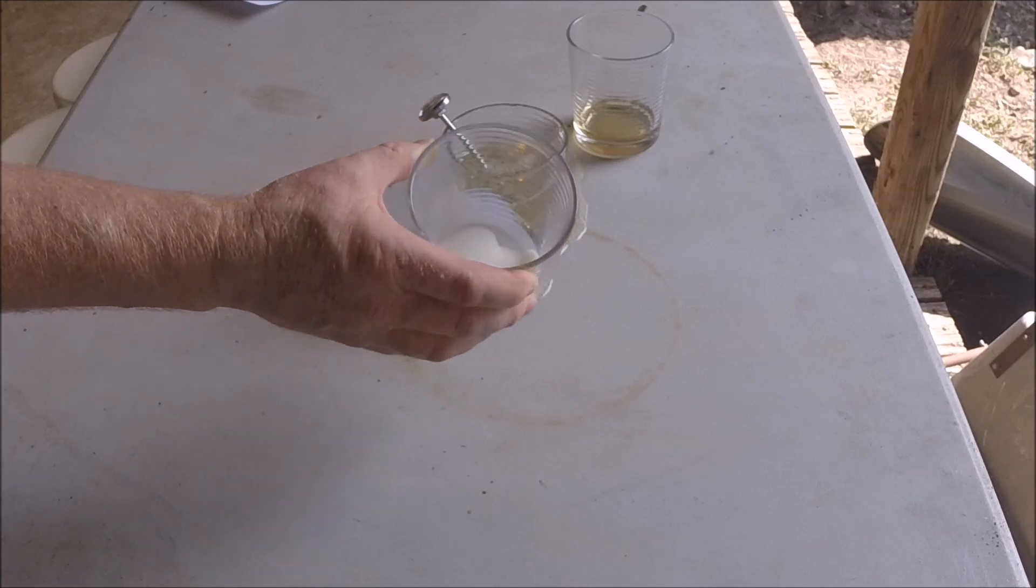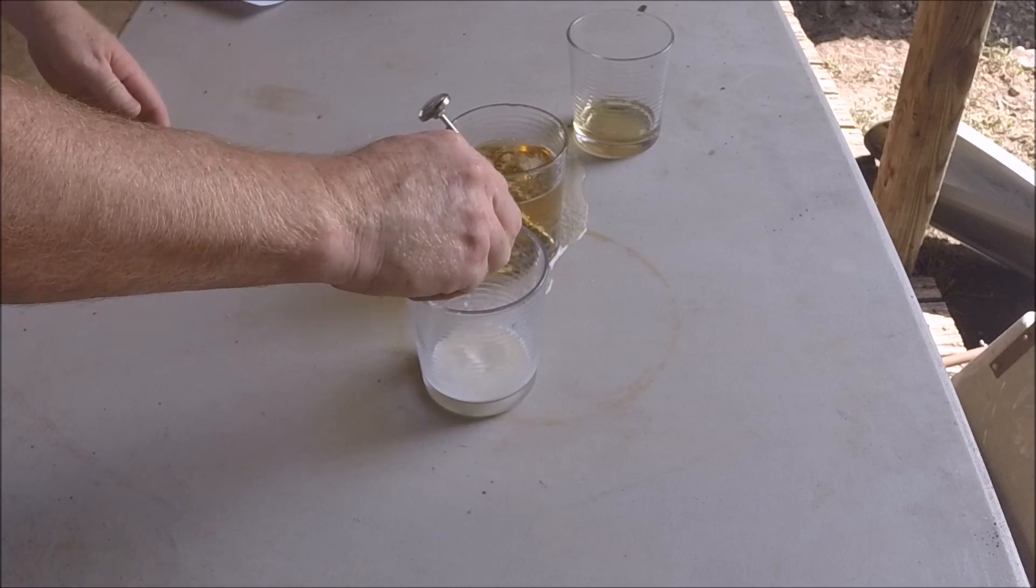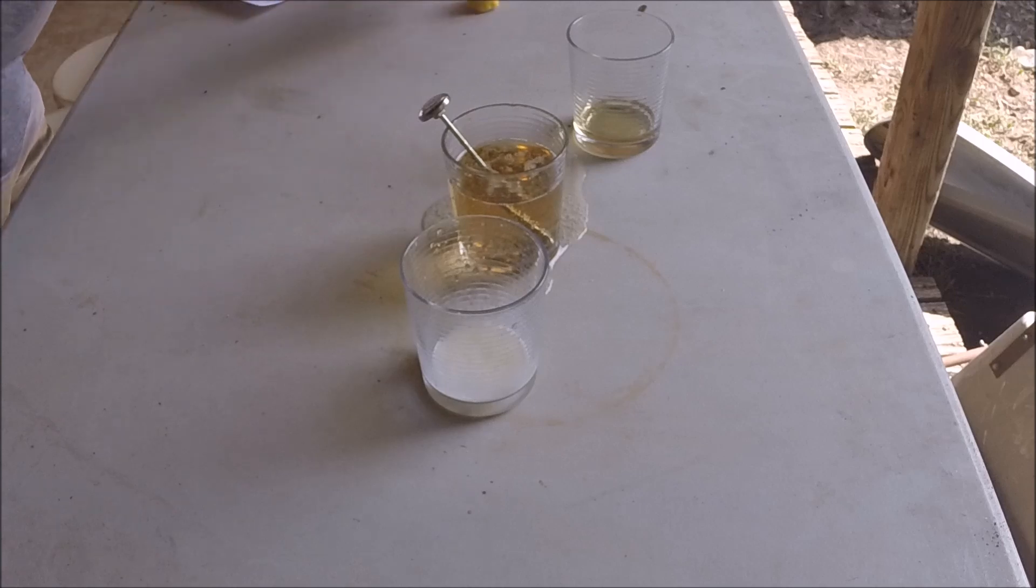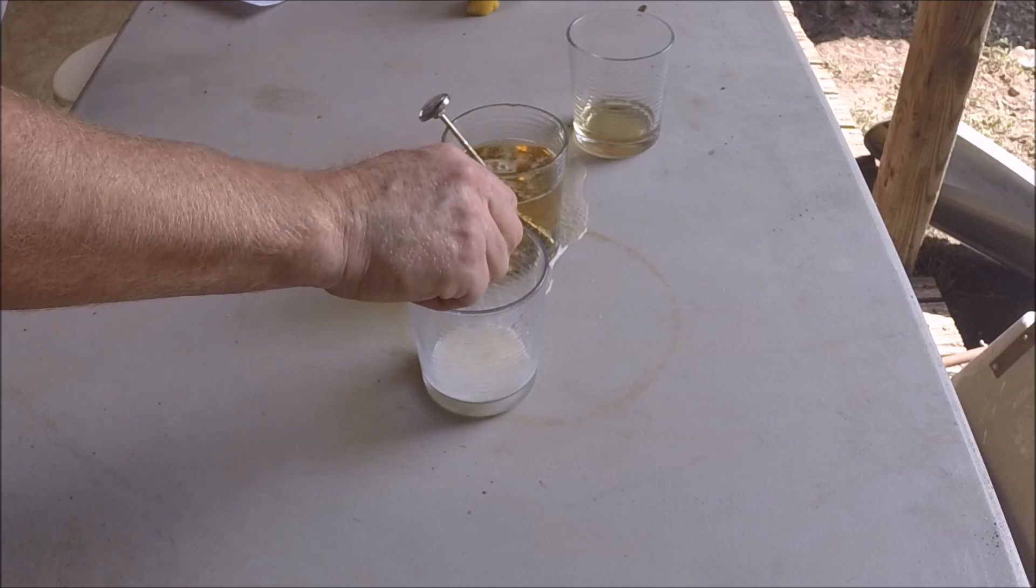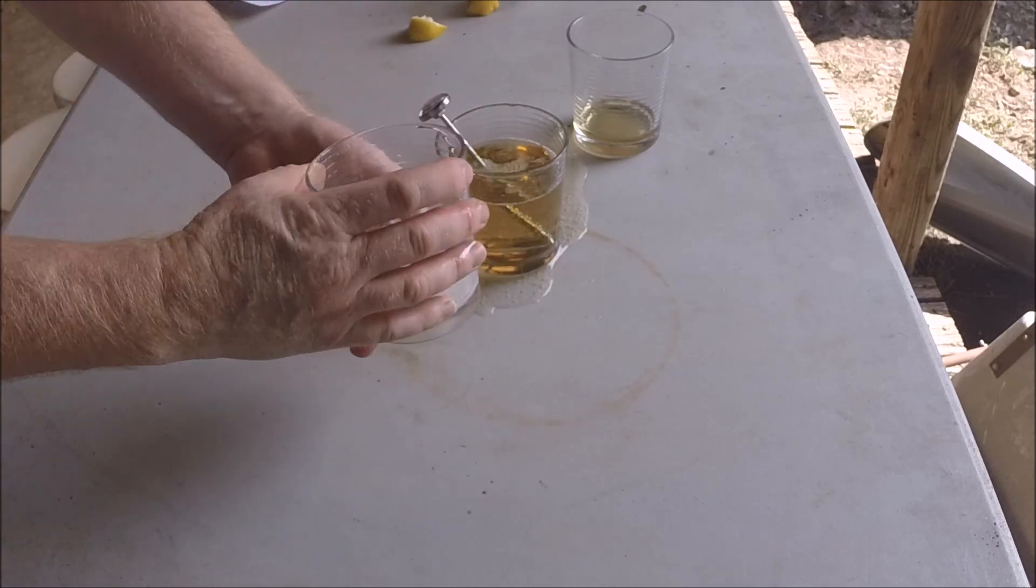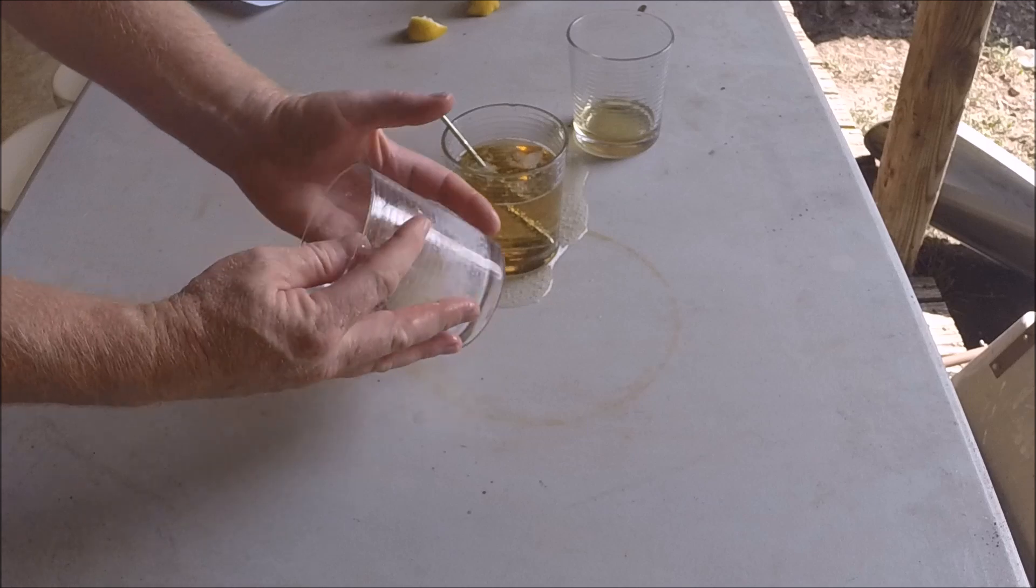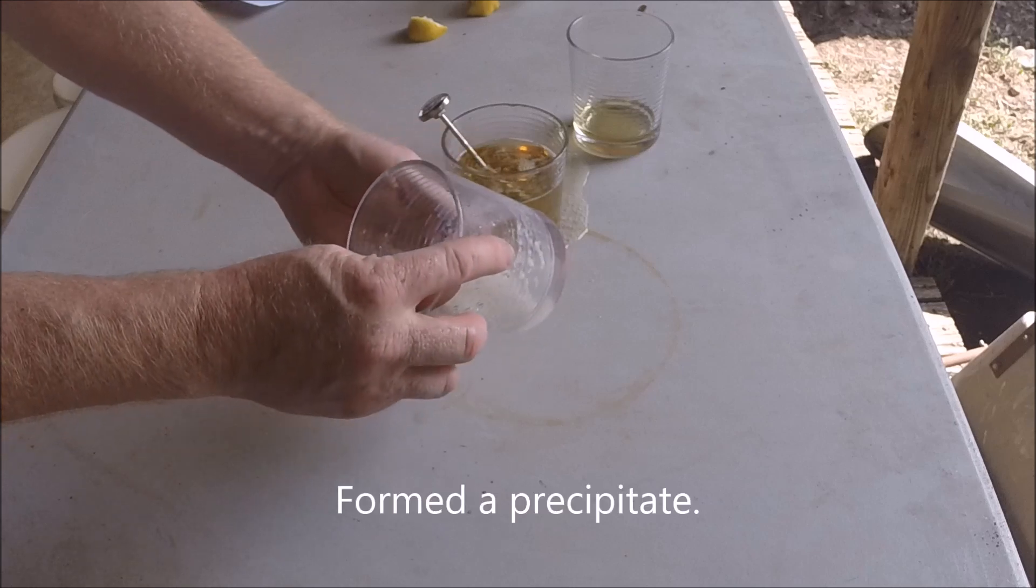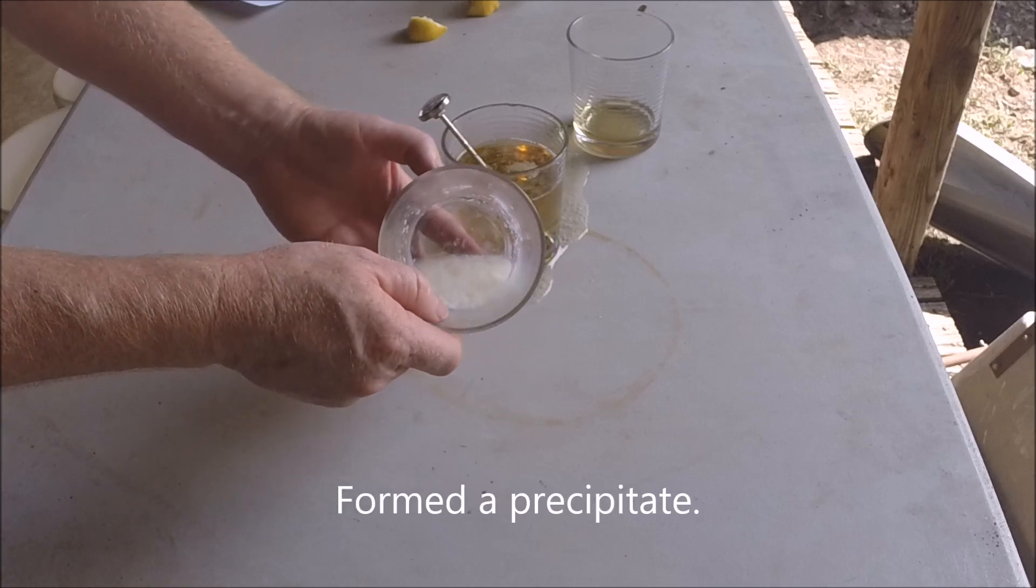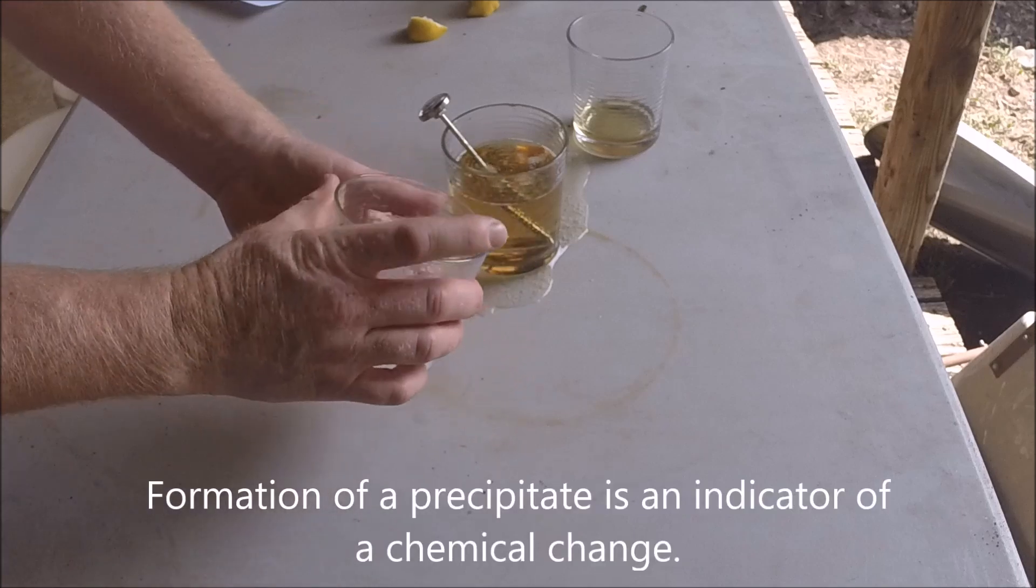But if I take some lemon and I squeeze some lemon juice into this milk right here, as soon as I do that, I notice a change. The milk begins to curdle. It looks a little nasty compared to the way it was. So a chemical change has happened because now I see there is a solid in there. It's kind of chunky. It sticks to the side of the glass when before it didn't. So when I combined the lemon juice in the milk, I formed a precipitate. It is a solid, whereas before I had two liquids. Formation of a precipitate is definite evidence of a chemical change.